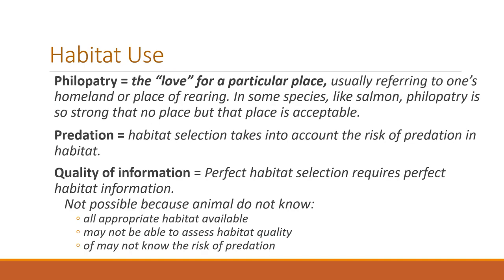Three interesting aspects of habitat use. One is a term called philopatry — the love of a particular place, in this case one's homeland or place of rearing. Animals often have an affinity for the place where they grew up. Some species, such as salmon, have such a strong propensity to return to the place where they were reared that no other place is acceptable for mating except back at the stream where they were born.